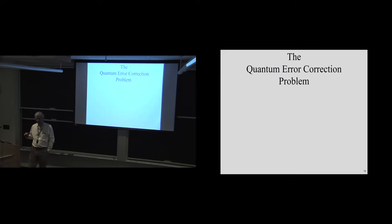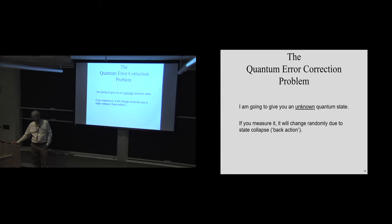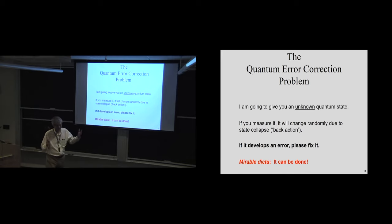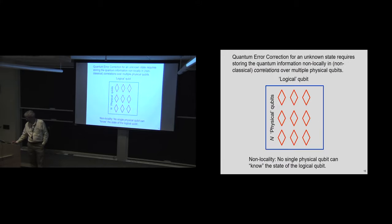So here's the quantum error correction problem in a nutshell. I'm gonna give you an unknown quantum state. If I give you a known state, you can reproduce it later. But if I give you an unknown state, and if you look at it to see if there's an error, it's gonna cause some kind of back action or a state collapse. If it develops an error, please fix it anyway. Seems impossible, but miraculously, it can be done. And to me, the fact that, at least in principle, it's possible to correct errors, unknown errors in unknown states, and get back the original unknown state, is much more remarkable than the fact that you could use quantum states to do computation. It just seems crazily impossible.